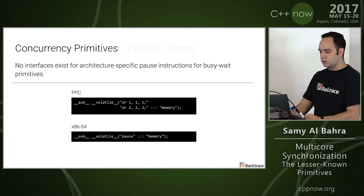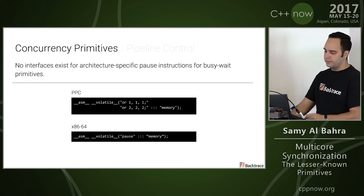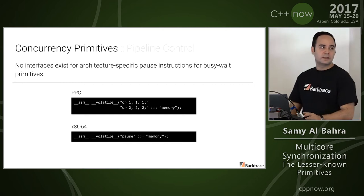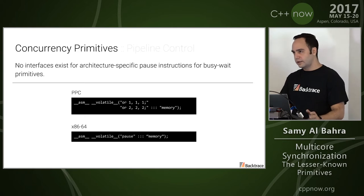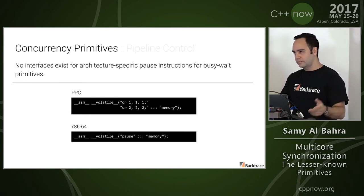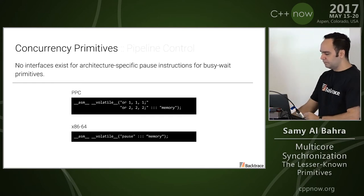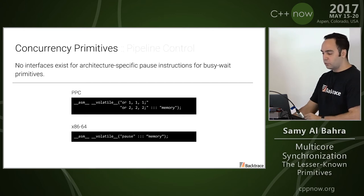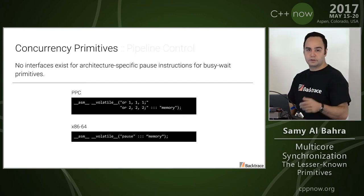Another issue, slightly more minor, is you don't really have interfaces for architecture-specific PAUSE instructions. If you are implementing any form of busy-wait algorithms or some form of an adaptive algorithm where you busy-wait and fall back to something that's blocking, typically you have to rely on compiler intrinsics such as mm_pause, etc. This helps avoid situations where you starve the pipeline, and if you are using hyper-threading, this can make quite a difference.